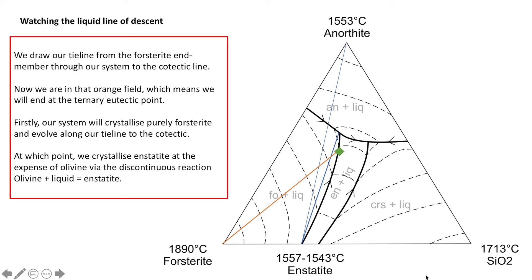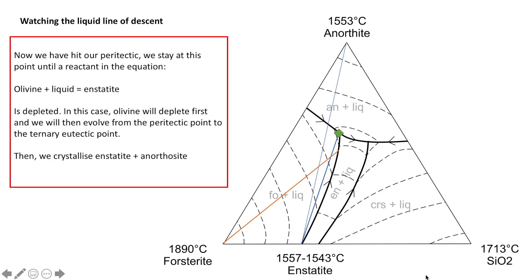At which point we're going to crystallise forsterite and enstatite in harmony until we hit that peritectic point. Just as before, we're going to undergo that discontinuous reaction of olivine plus liquid equals enstatite. Because we started in that yellow field, we're going to run out of olivine before we run out of liquid in that discontinuous reaction.